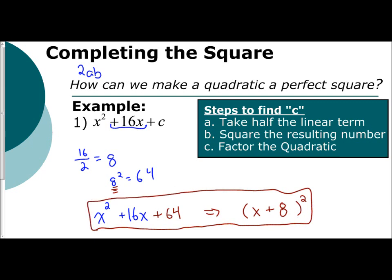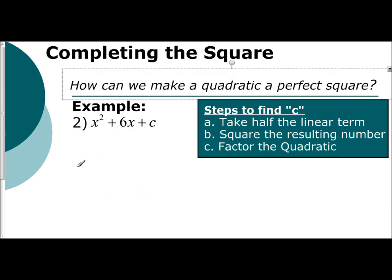Let's take a look at the next example. How can we make a perfect quadratic square from this? So what we're going to do is the same idea. We're going to take half our linear term. So 6 and divide by 2 is 3. I'm going to square that number. So 3 squared gives me 9.